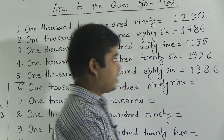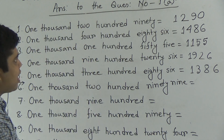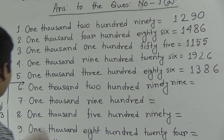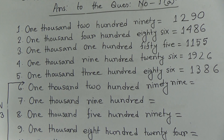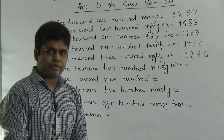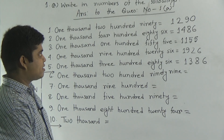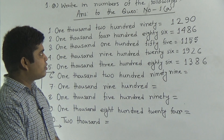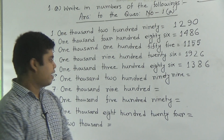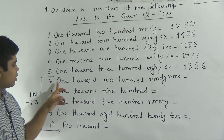My dear students, this is our today's RW class. Another 5 numbers will be your SW. My dear students, I repeat — RW class is very, very important for your annual exam. So you must do this class very carefully. Now, question number 6: